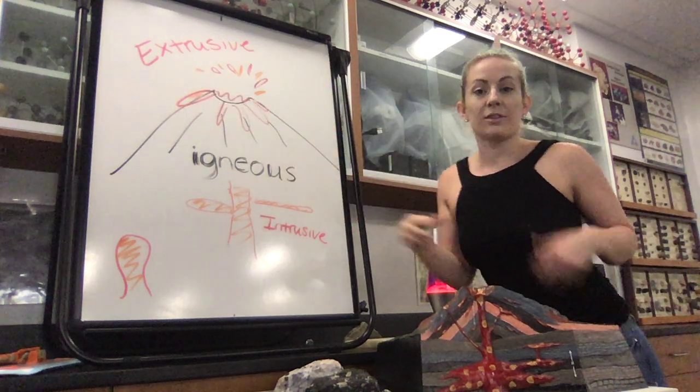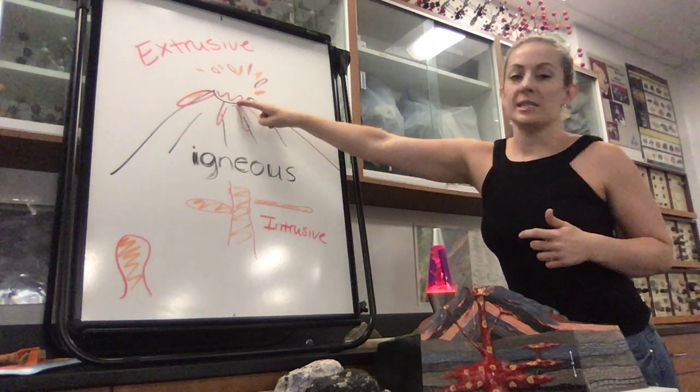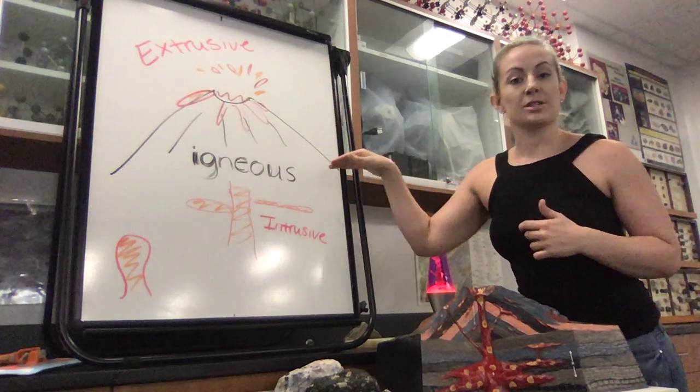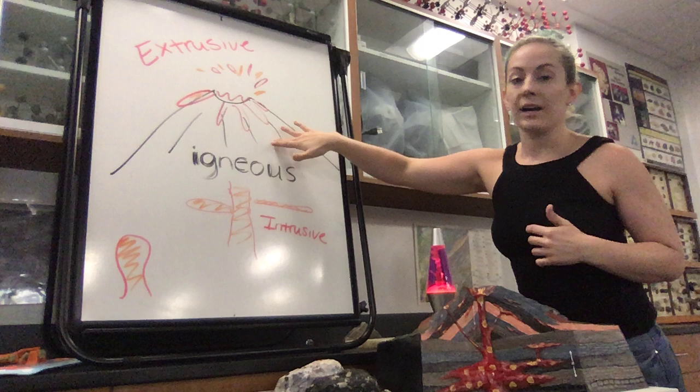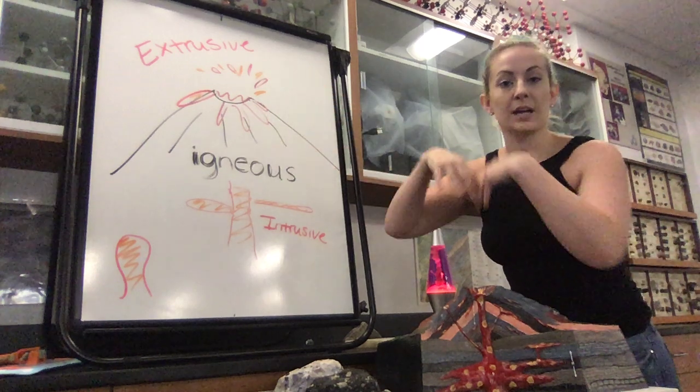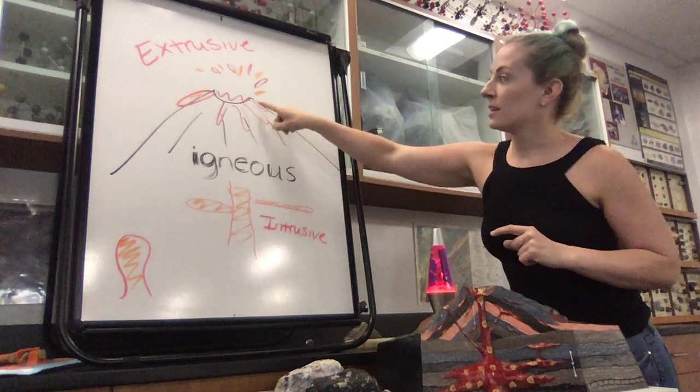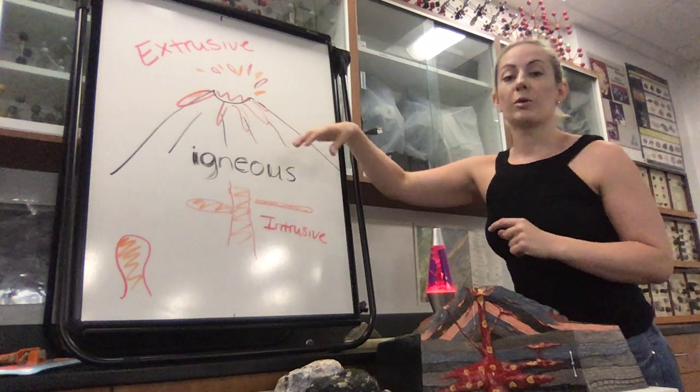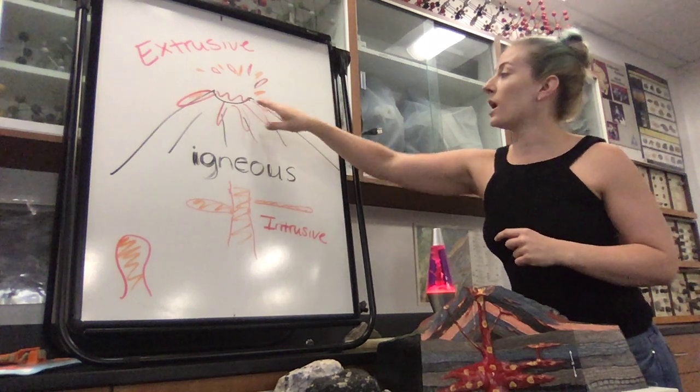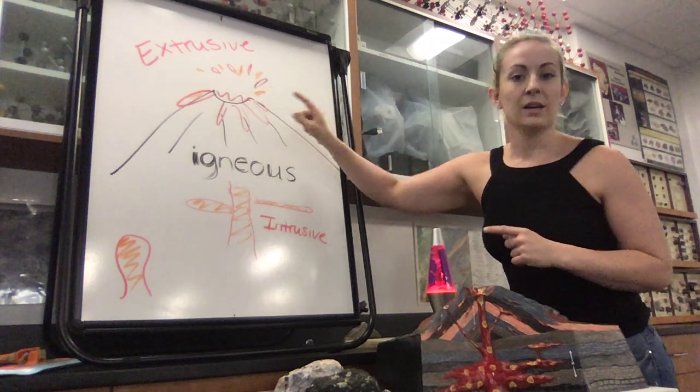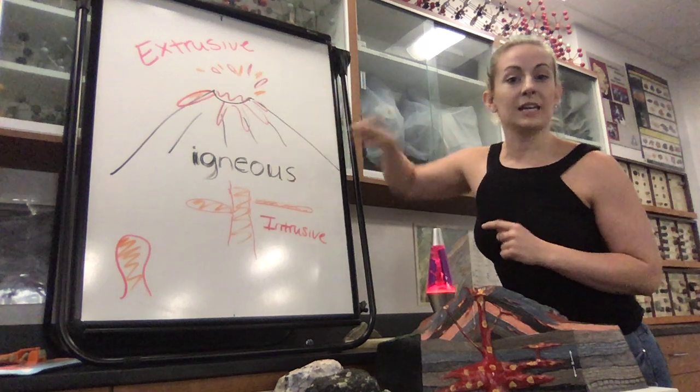Extrusive, you can remember like the word exit, it's the material that exits the earth's surface. So here at a volcano, anything that is being extruded, be it the lava itself or perhaps any ash or other molten debris, would form an extrusive igneous rock.